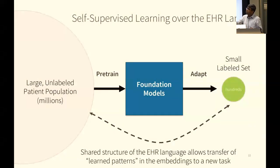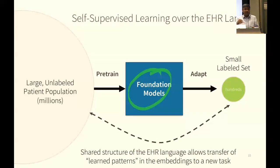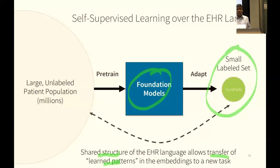The intuition here is that we can do self-supervised learning over the EHR language. We have a large unlabeled patient population in the millions — timelines of what happened, then what happened, for millions of patients — and we can train a foundation model on it. We predict the next code, or how many days till the next code, or how many days to a specific next code. This shared structure allows transport of learned patterns to a new problem, such as building a classifier for who's going to develop lupus nephritis, needing as few as 60 examples — few shot, sometimes even zero shot.